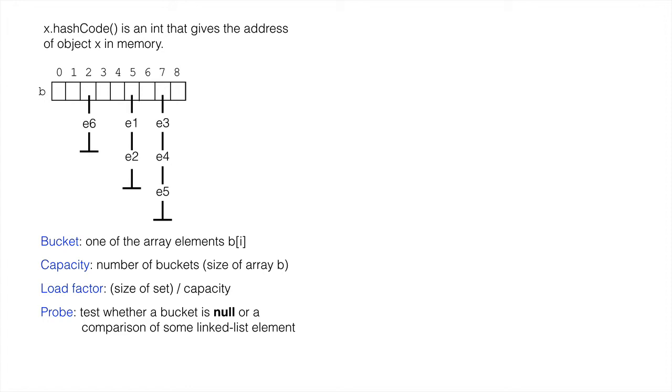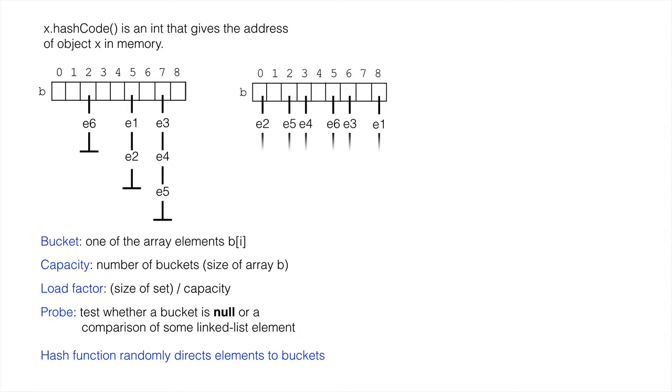An important point about the hash function is that it randomly directs elements to buckets. The diagram on the monitor shows one way in which the six elements could have been placed in the set. But just as likely, each of the six elements could have been placed in a single bucket, or all of them in one bucket.